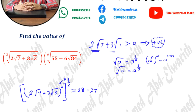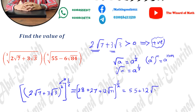The cross term is 2 × 2 × 3 = 12, all raised to the power of one half. So 28 + 27 = 55, and the cross term is 12√21. Therefore (2√7 + 3√3)² = 55 + 12√21, and (2√7 + 3√3) = (55 + 12√21)^(1/2).